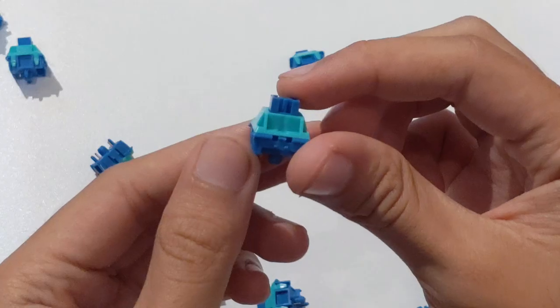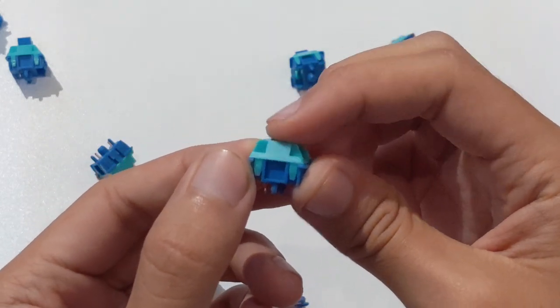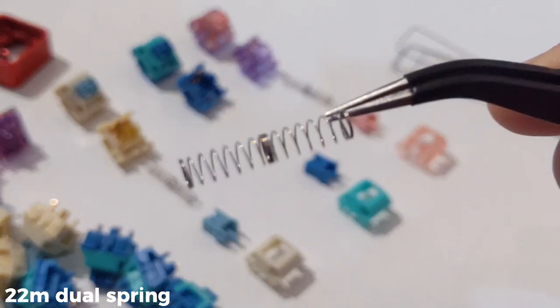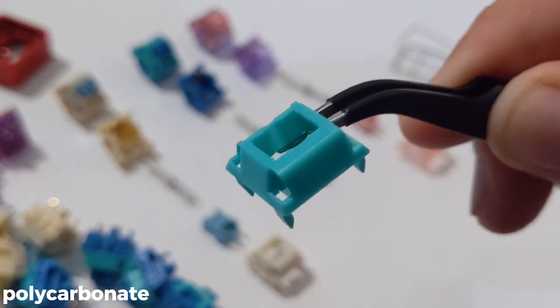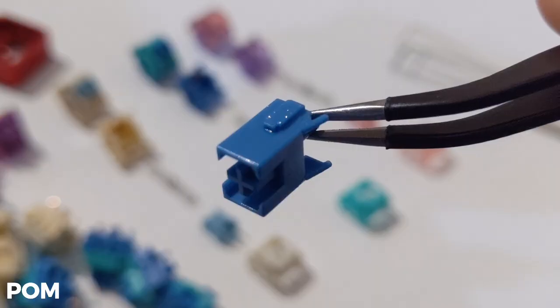Let's start with the EpoMaker Bluebird. This is actually my favorite of the three. A linear switch that has an actuation force of 47 grams and a bottom out of 60 grams. This has a 22mm dual spring. This has a nice mint color for the PC top housing and blue for both the nylon bottom housing and the POM stem.